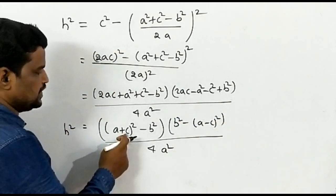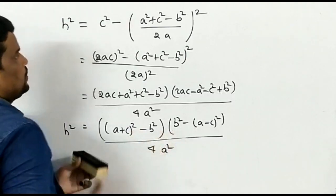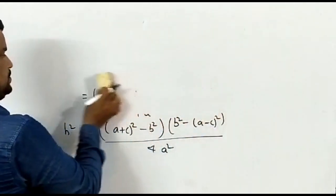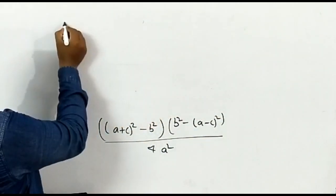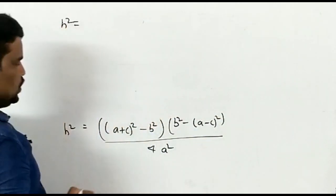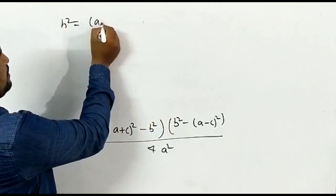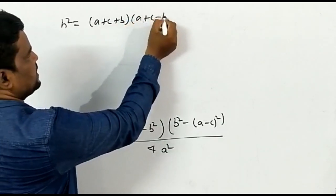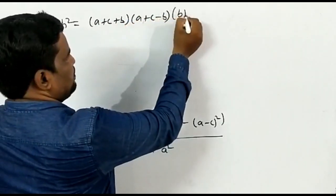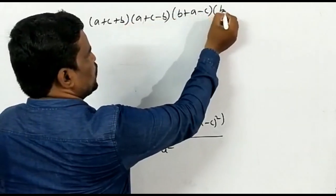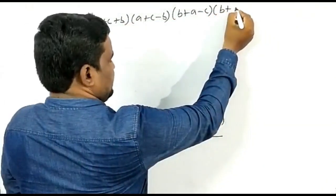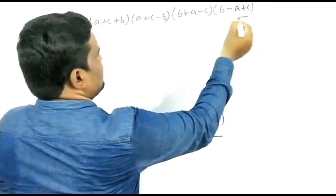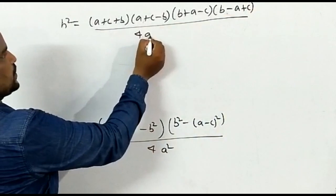Expanding again using the difference of squares identity, we get: H² = (A+C+B)(A+C−B)(B+A−C)(B−A+C) / 4A².